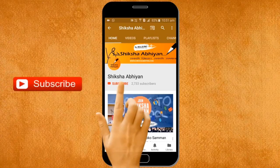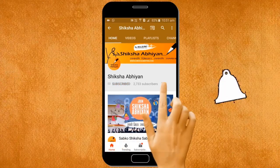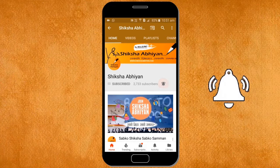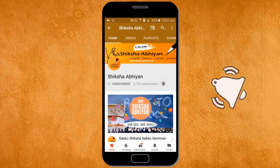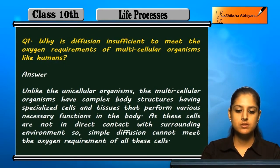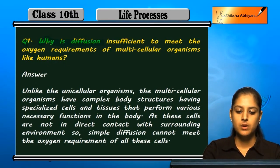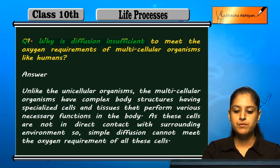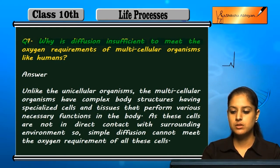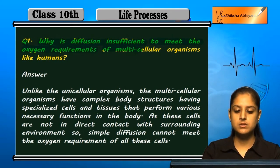Subscribe to our channel by clicking the subscribe button, click the bell button, and enjoy the latest uploads from our channel. Let us discuss some questions. First question: why is diffusion insufficient to meet the oxygen requirements of multicellular organisms like humans?